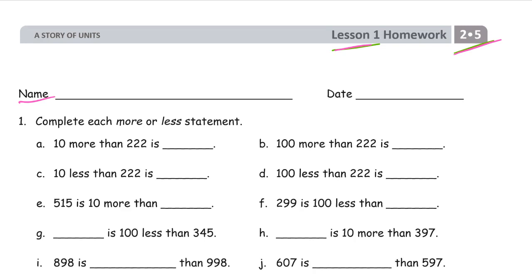10 more than 222 is 232. That's just 10 more. Then 100 more than 222 is... what's 100 more? It's 322.